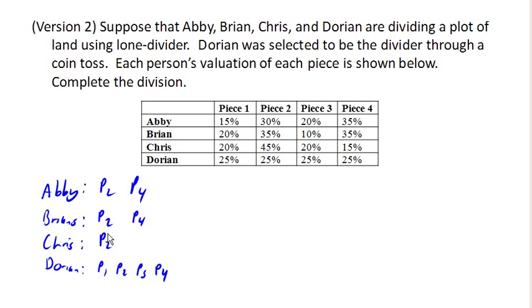And so because of this, the only piece that nobody cares about, apparently, is piece 3. And so piece 3 is going to get awarded to Dorian. And the other three, the rest of the content other than piece 3 is going to get reassembled. And they're gonna start the whole process over with a new divider.